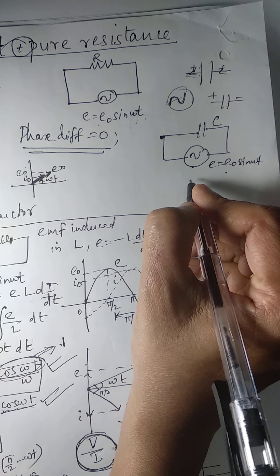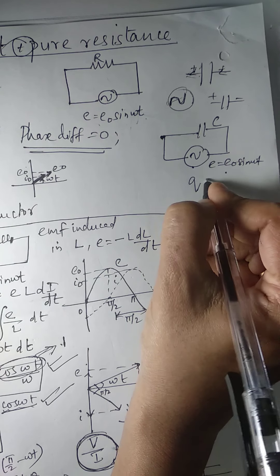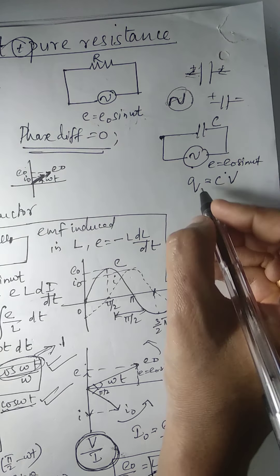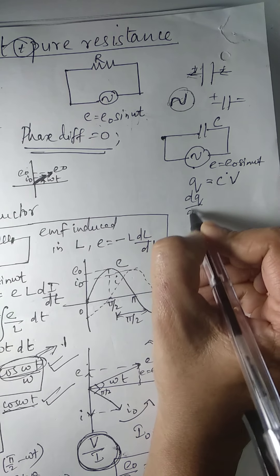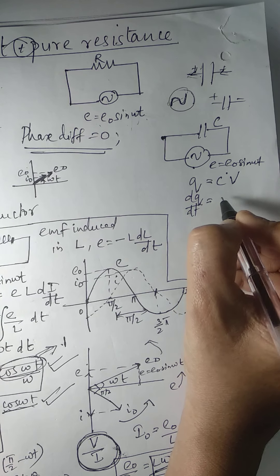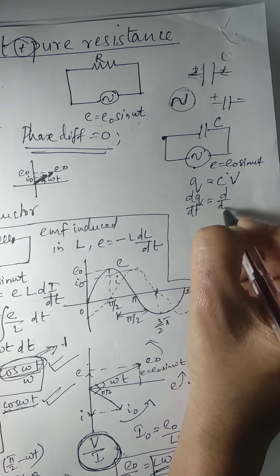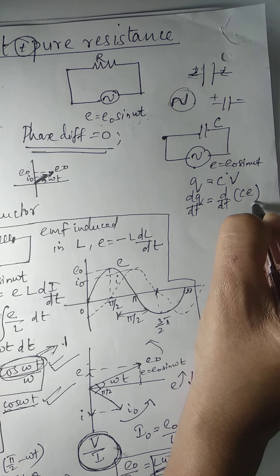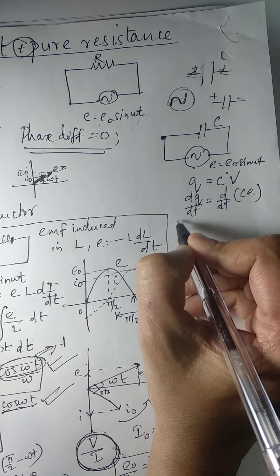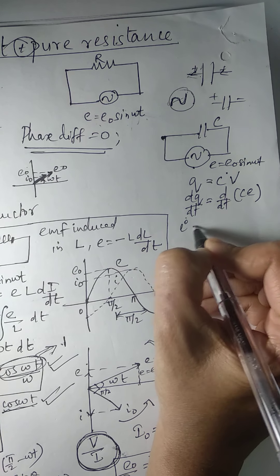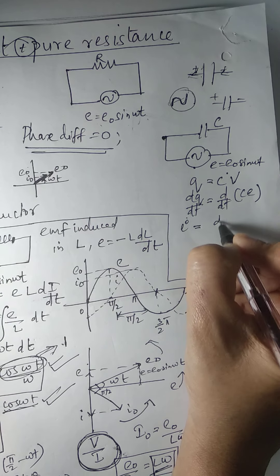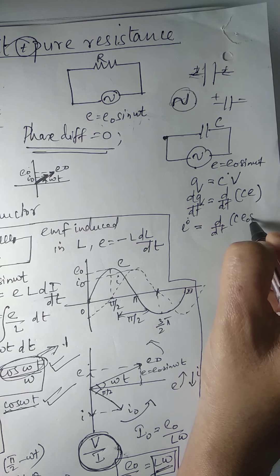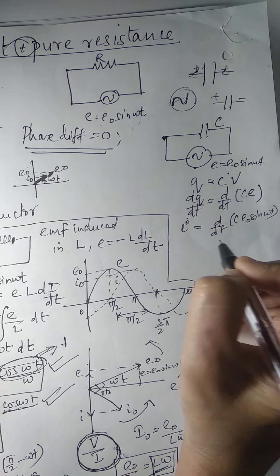We know that when a capacitor is having a charge, C = Q/V. When you differentiate, dQ/dt = d/dt of C·V. Instead of V we can use E here. So dQ/dt, which we know is I, so I = d/dt of C·E₀ sin(ωt).